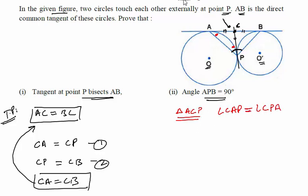Now look at triangle CBP. In this triangle, again two sides are equal (CP equals CB), which means this is an isosceles triangle. So we can write that angle CBP is equal to angle CPB.